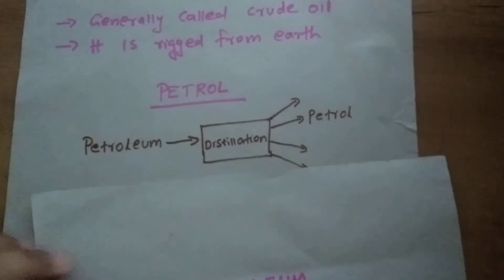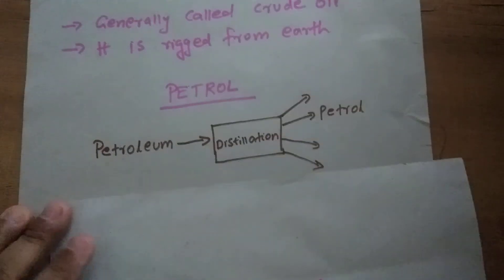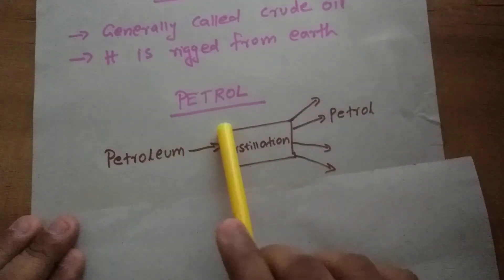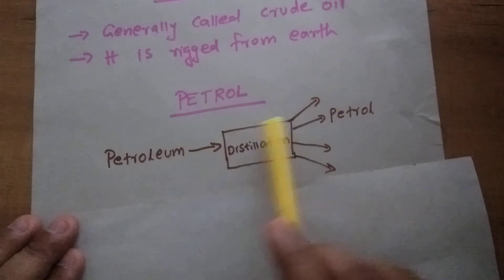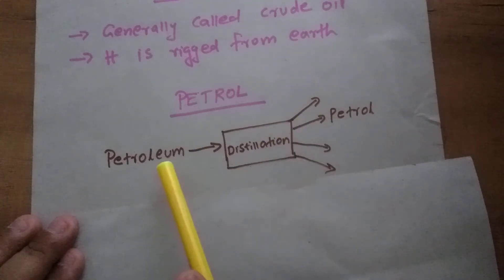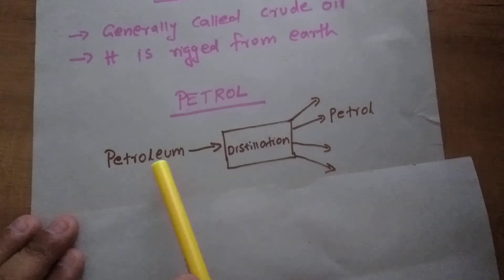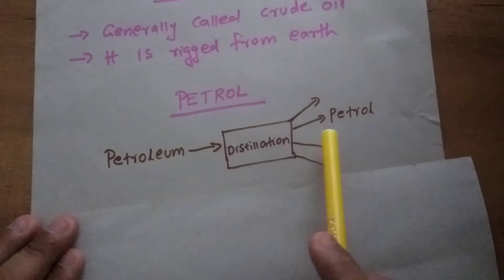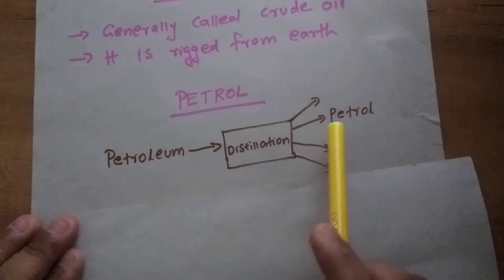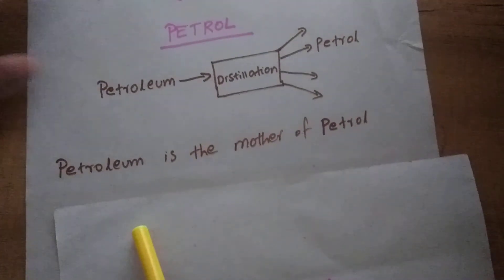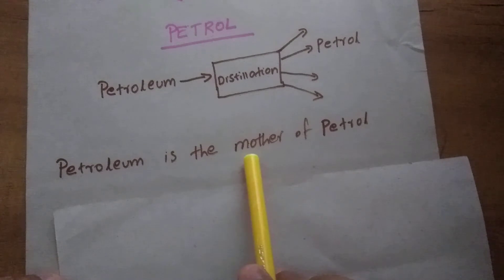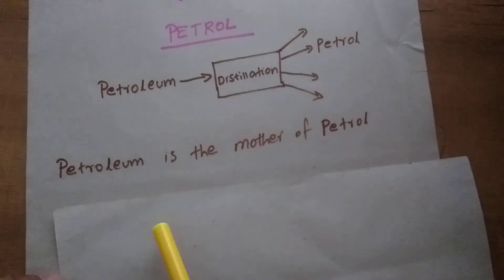Petrol is one of the distillation products of petroleum. After the distillation of crude oil, you get many products, and petrol is one of them. So simply, petroleum is the mother of petrol.